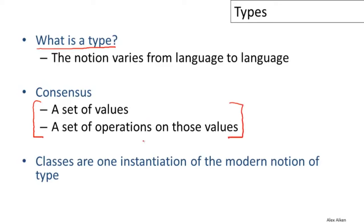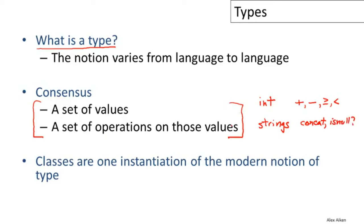For example, integers have operations like addition, subtraction, and comparison. Strings are a different type with operations like concatenation and checking for empty strings. These operations are different from integer operations, and we don't want to mix them up — doing string operations on integers would give nonsense. In modern programming languages, types are expressed in different ways. In object-oriented languages like Cool, class names are the types, with one exception called self-type.